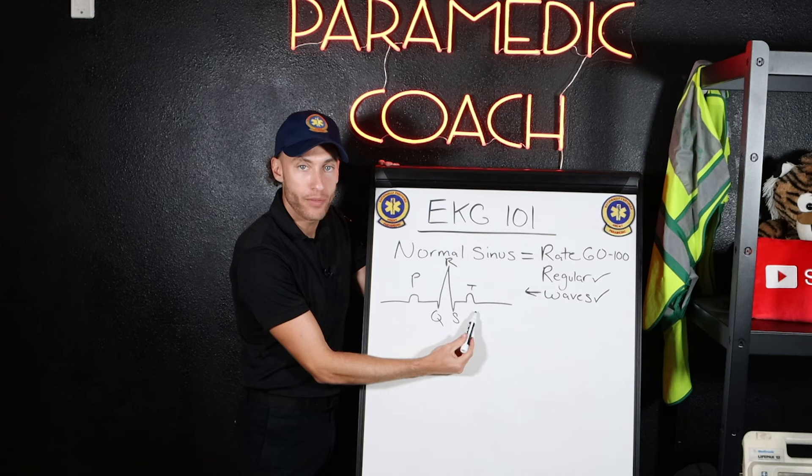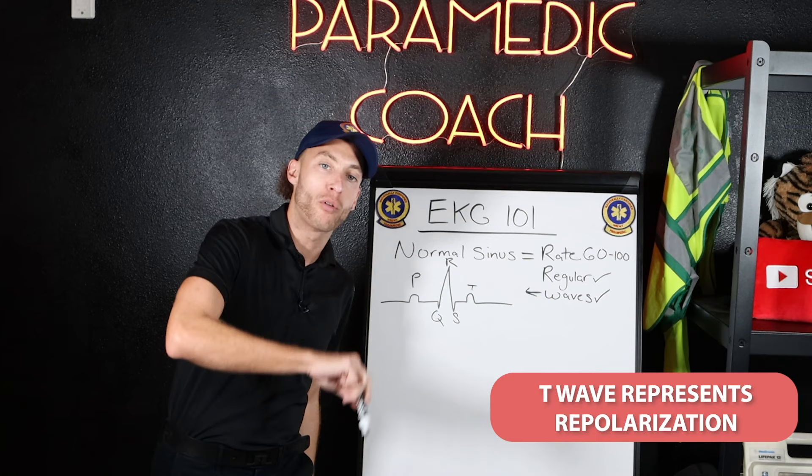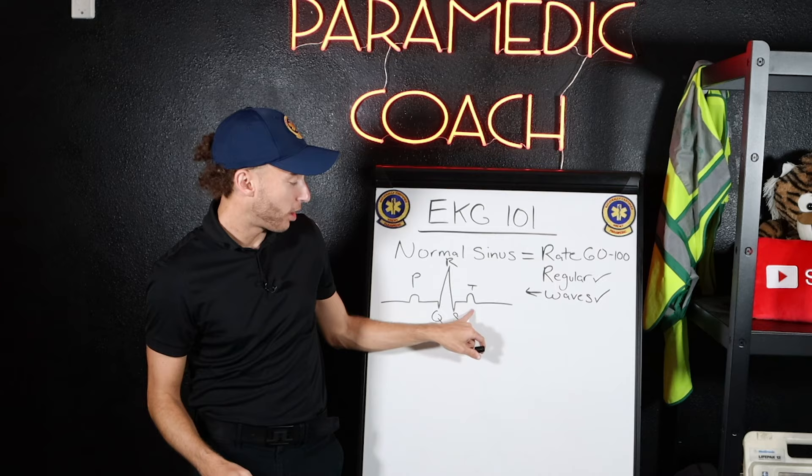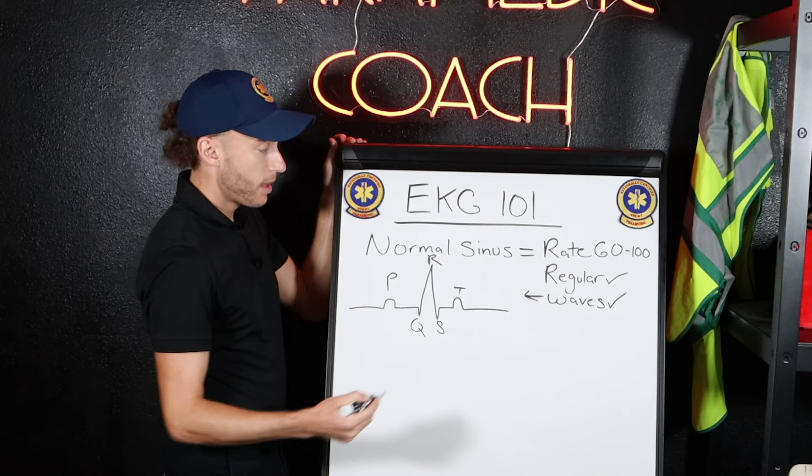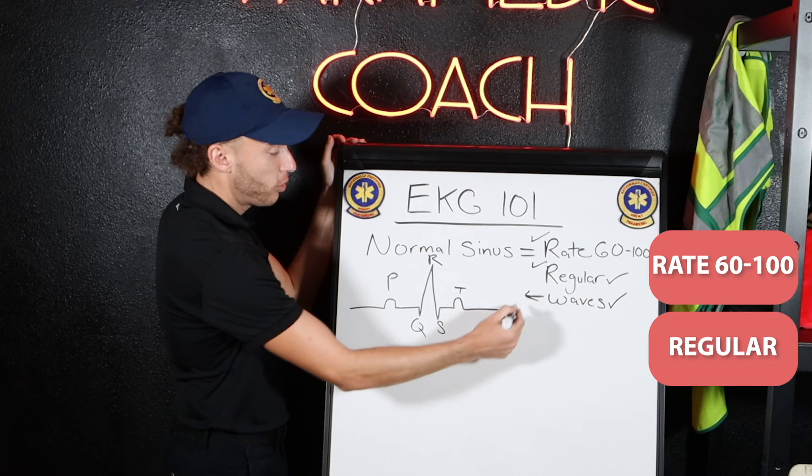Over here we have the T wave. What does that represent? The T wave represents something called repolarization. 'Re' sounds like rest — exactly. This is when the ventricles repolarize, or reset, or relax for the next contraction. That's how I remember it for life, and that's how I just taught you. If the rate is correct at 60 to 100, and we have a regular rhythm with all these waves in order, we have normal sinus rhythm.